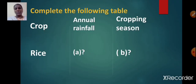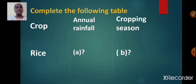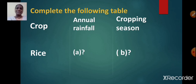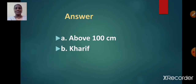Here is one more question: complete the following table with crop, annual rainfall and cropping season for rice. Annual rainfall required for rice to grow is above 100 cm, and the cropping season of rice is Kharif.